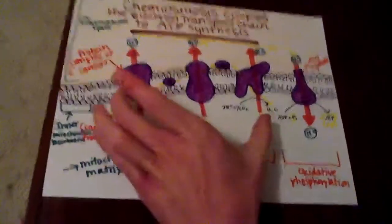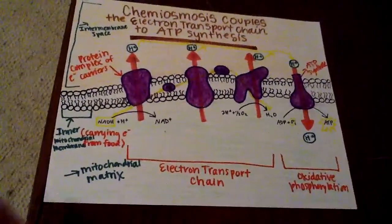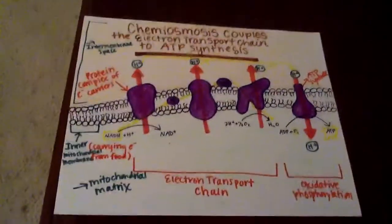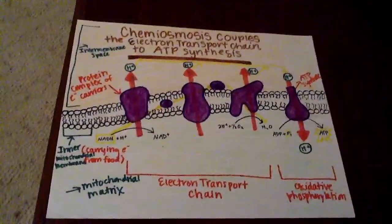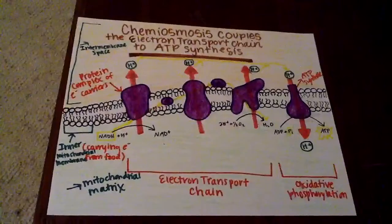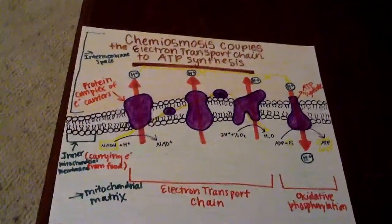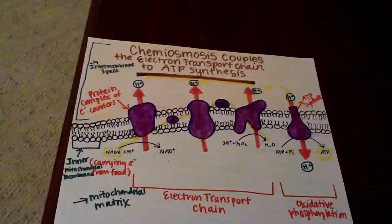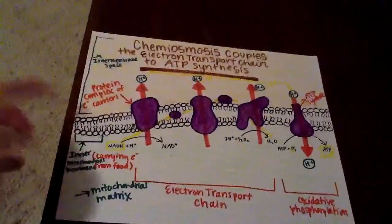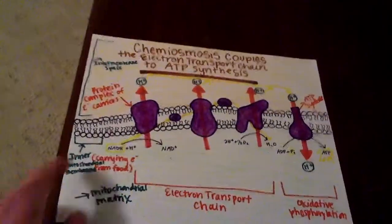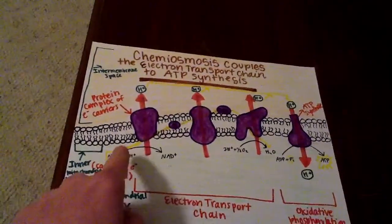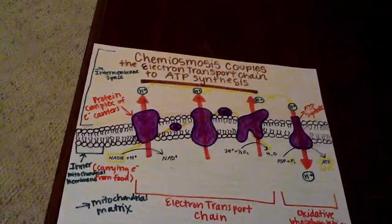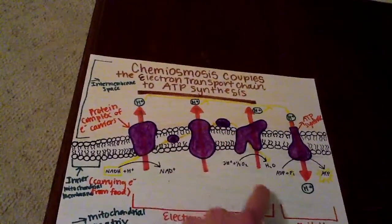From here to here, you see the electron transport chain taking place, and then this is obviously ATP synthase and oxidative phosphorylation. NADH shuttles high-energy electrons extracted from food during glycolysis and the Krebs cycle to an electron transport chain built into the inner mitochondrial membrane. The gold arrows trace the transport of electrons, which finally pass to oxygen at the downhill end of the chain to form water. You can see how it flows across here and then down here and finally produces water.